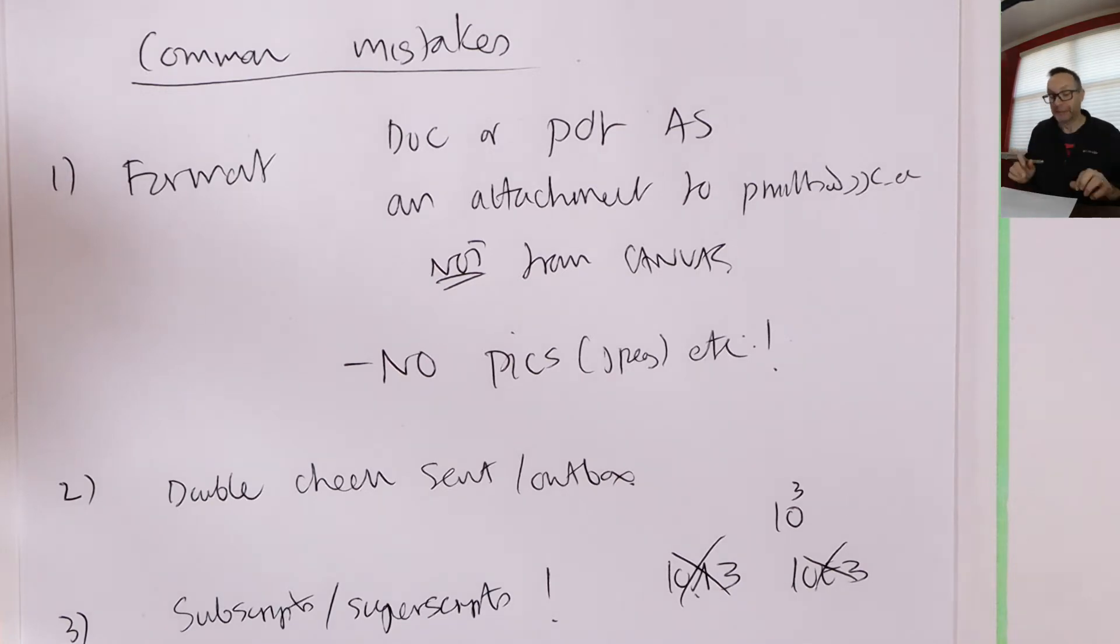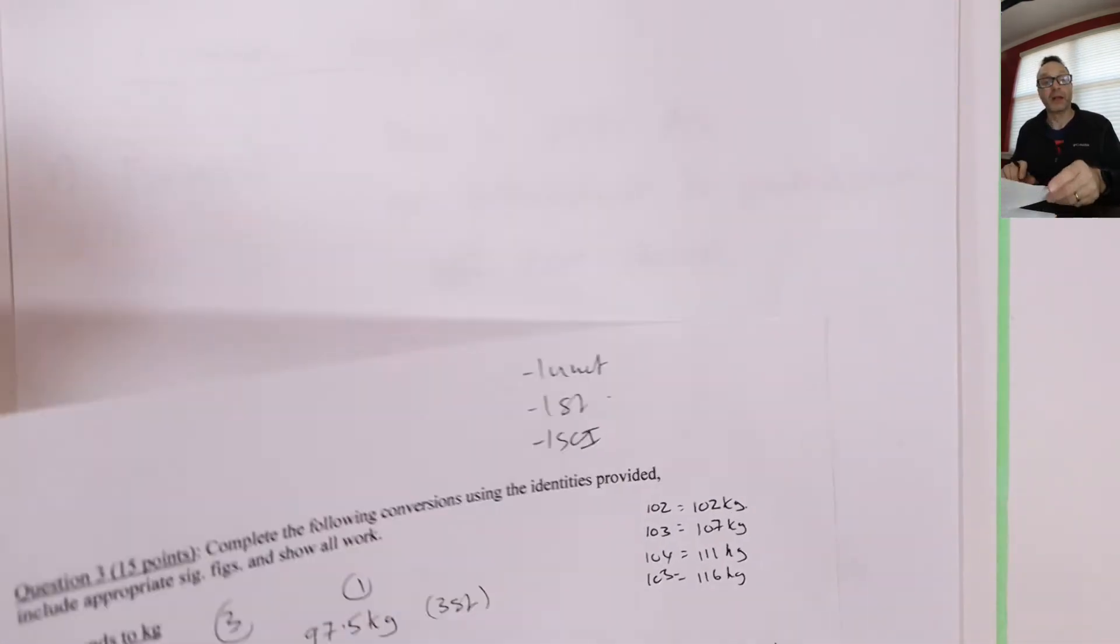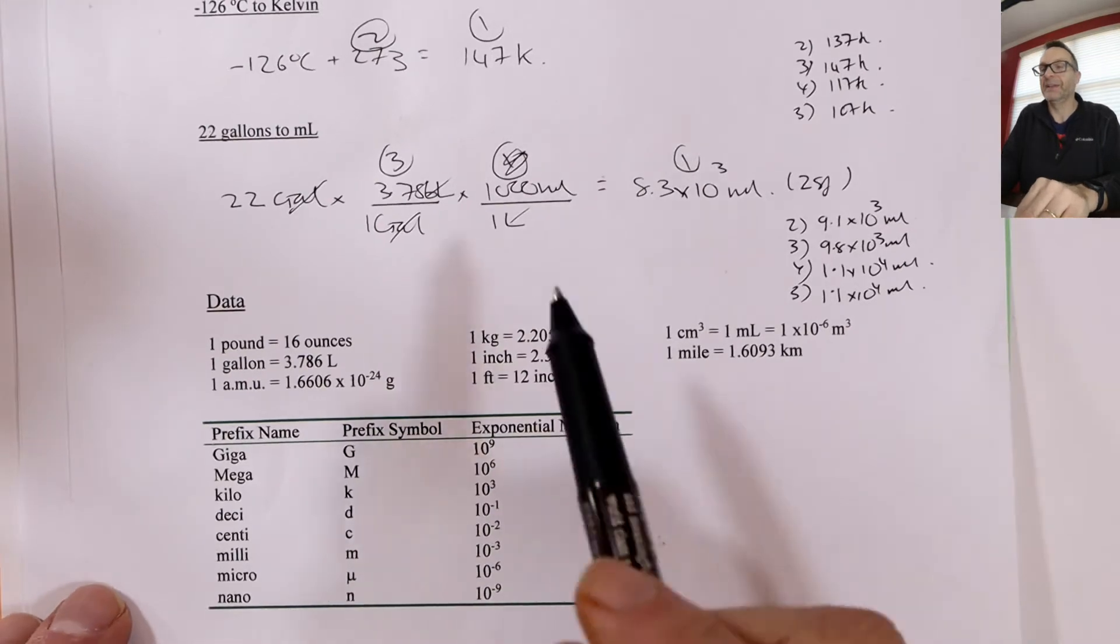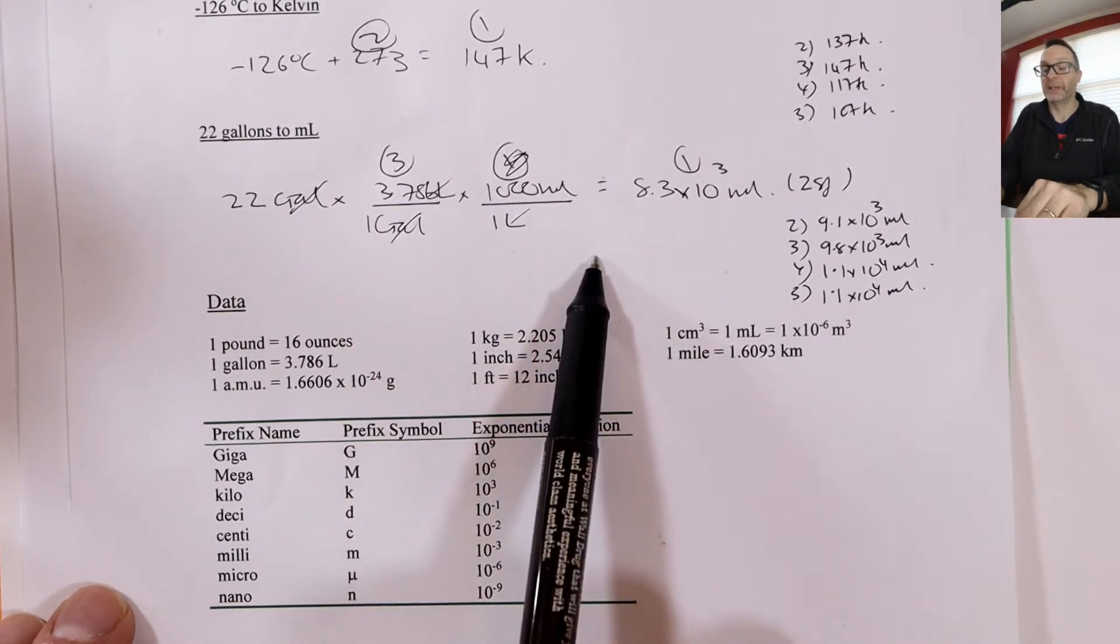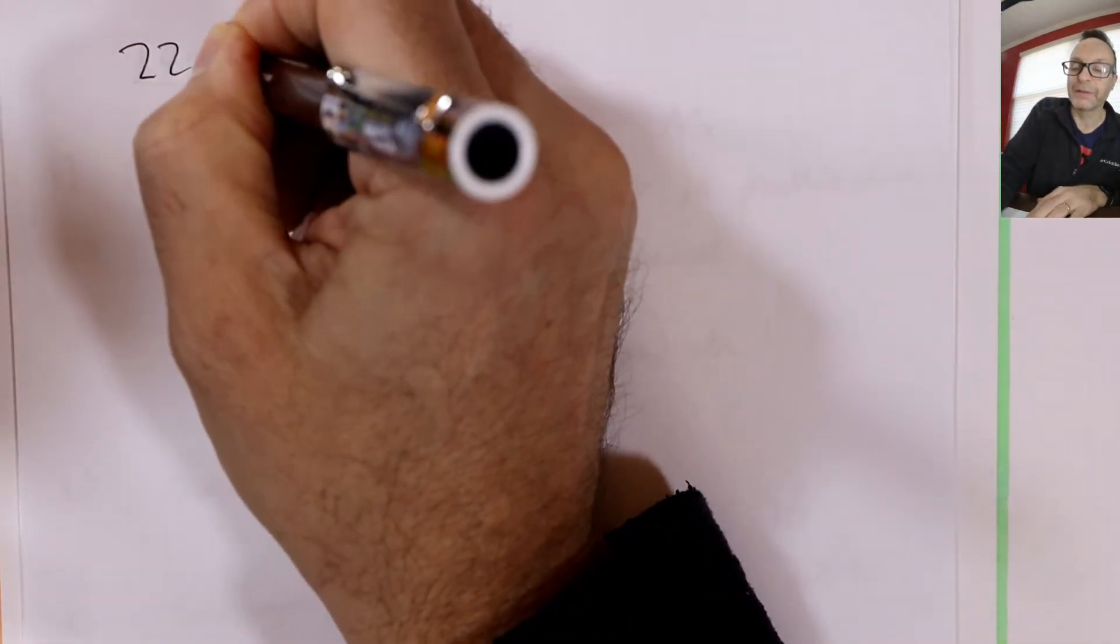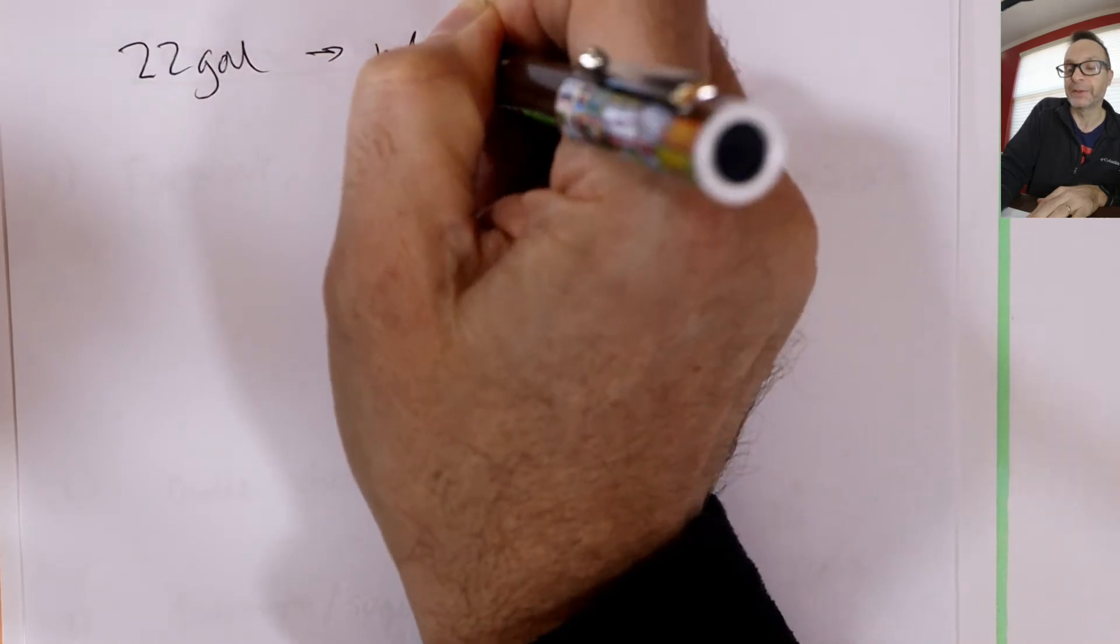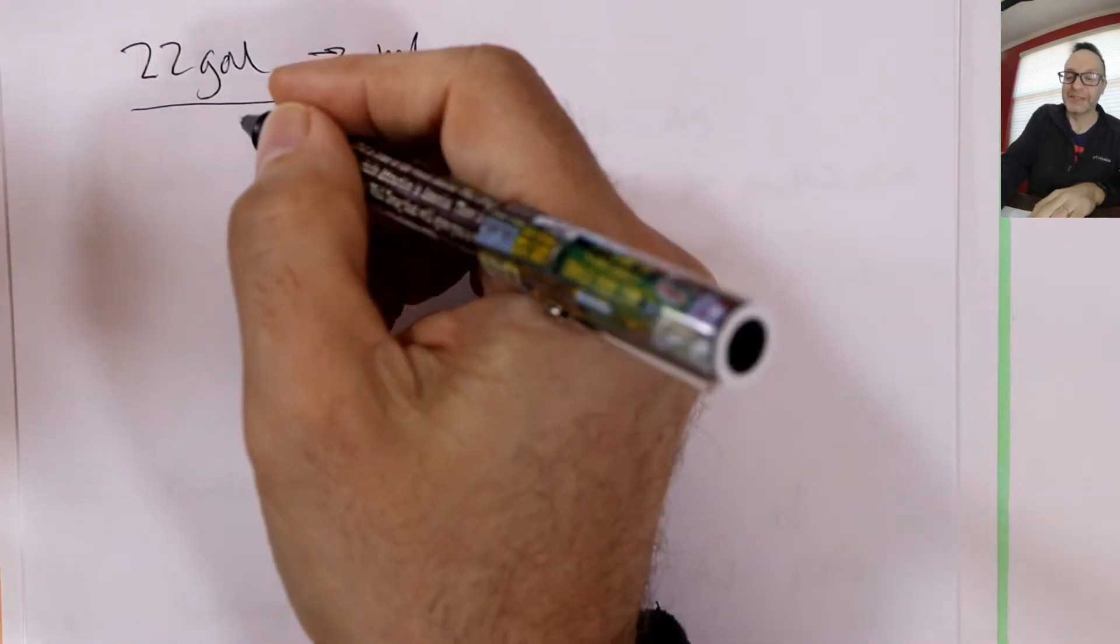All right. Next thing, math. Now, this one, and a couple of people did this on the quiz, and I just want to double check you understand what I'm talking about here. Okay. So I'm going to do the same question I did on, this is chemistry 101 proper quiz. So 22 gallons to milliliters. I'll show you a couple of wrong ways to do it and the right way to do it. Okay. Let's do the wrong way first.